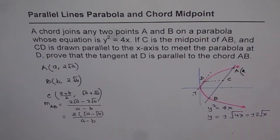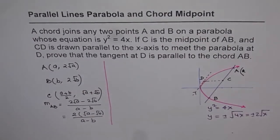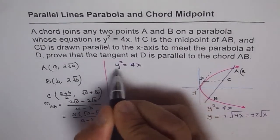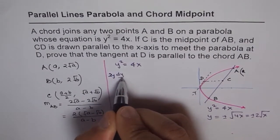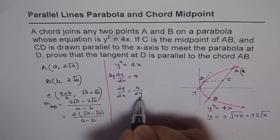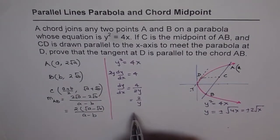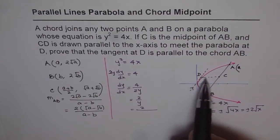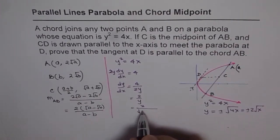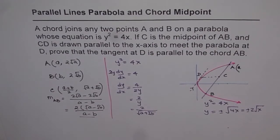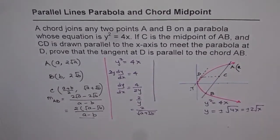To find the slope at D, we work with our equation. The equation is y squared equals 4x, so differentiating with respect to x gives 2y dy/dx equals 4, and so dy/dx equals 4 divided by 2y. The y-value of D is the same as the y-value of C, because CD is parallel to the x-axis. So the y-value is square root A plus square root B, and the slope at D is 2 over (square root A plus square root B).